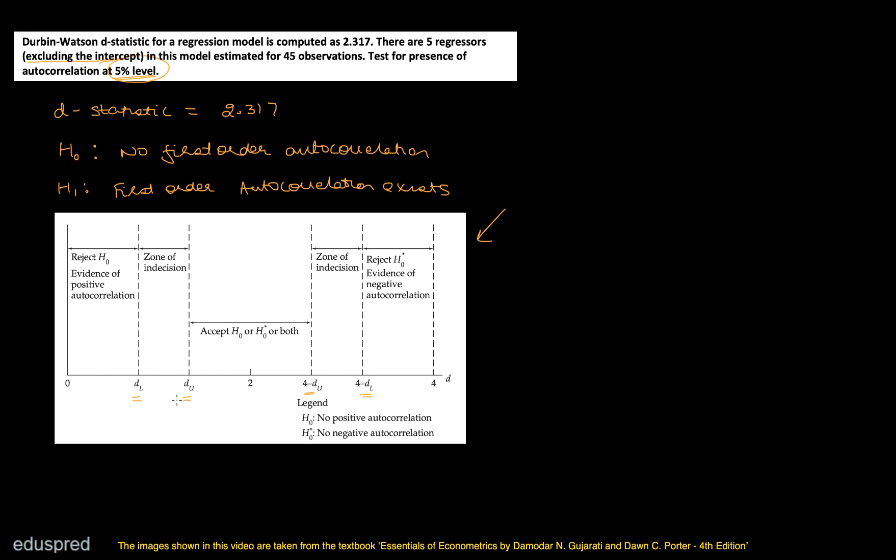In this case, we have two critical values. DL is the lower critical value and DU is the upper critical value. So let's take a look at the table to find these critical values first.